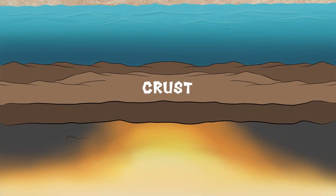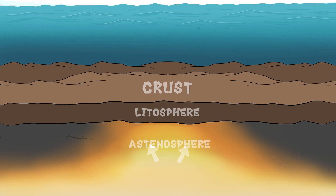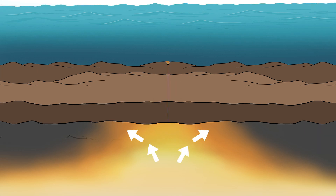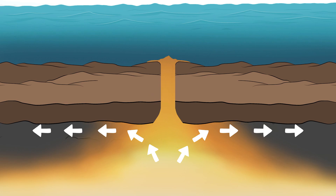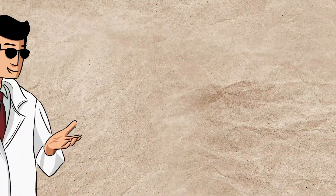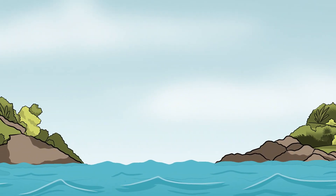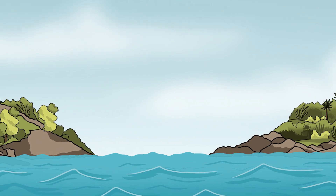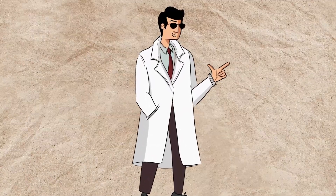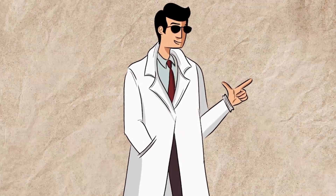Beneath the surface, the Earth's outer layer — the crust — is divided into large slabs called tectonic plates, which float on a semi-fluid layer of the mantle. These plates move slowly over time, constantly reshaping the planet's surface. This idea of continental drift was first proposed by German scientist Alfred Wegener in 1912. He noticed striking similarities in the coastlines of continents separated by oceans, as well as matching fossils and rock formations on distant shores.